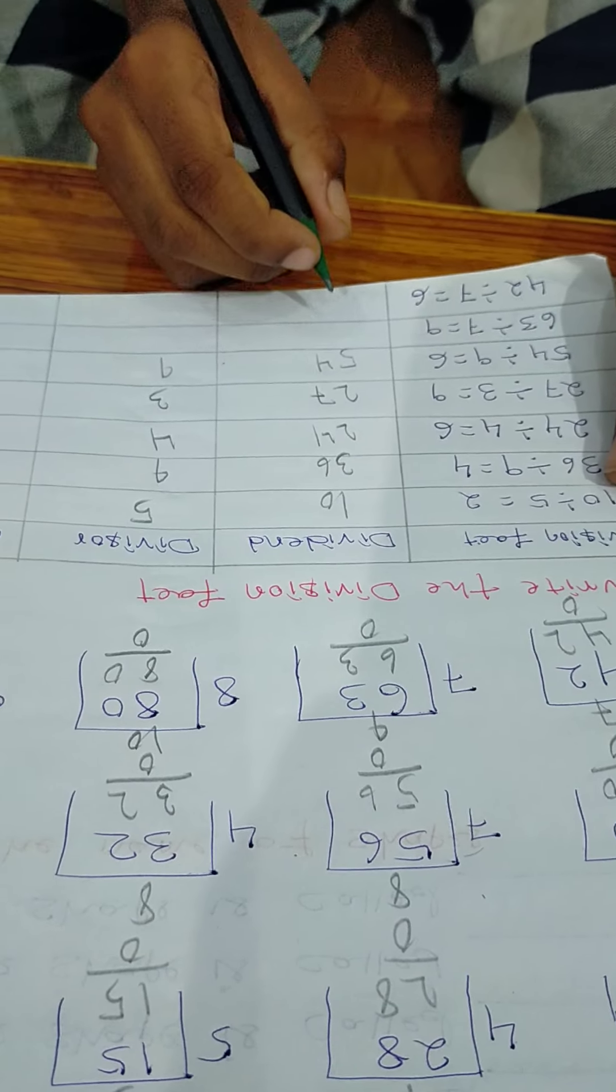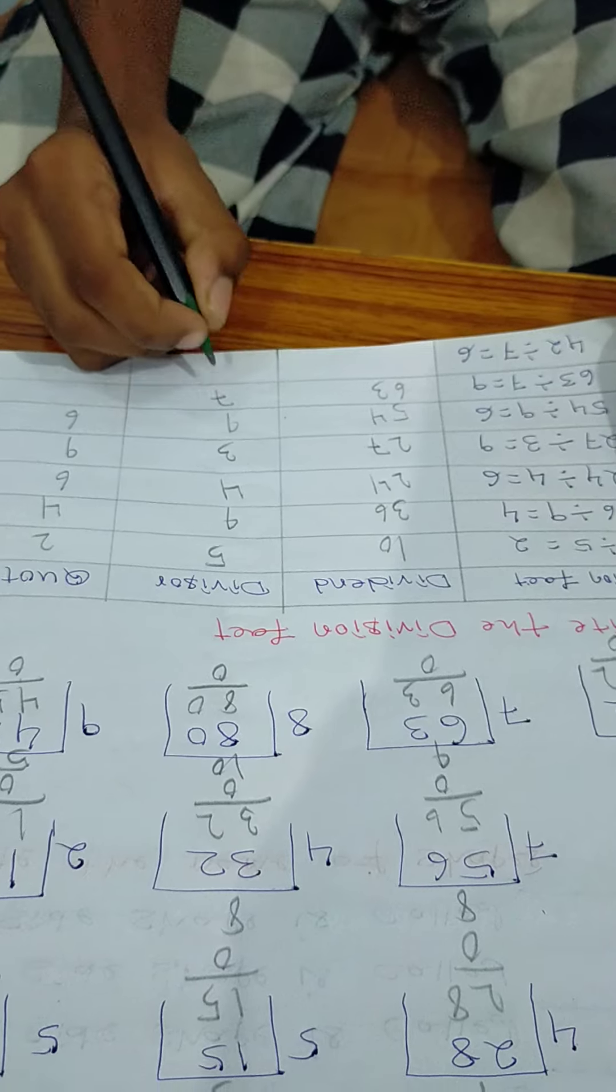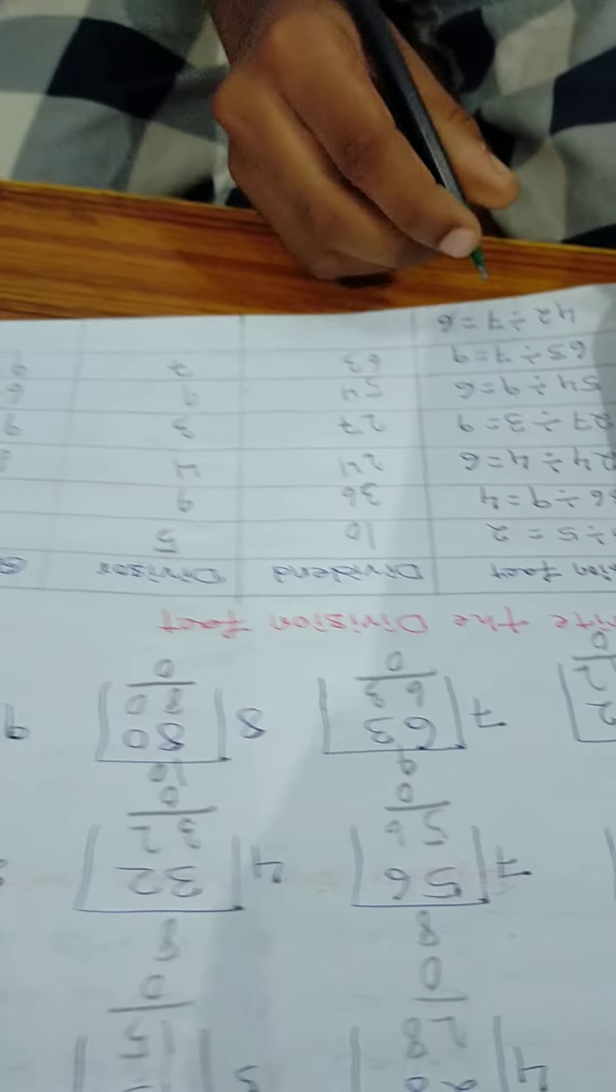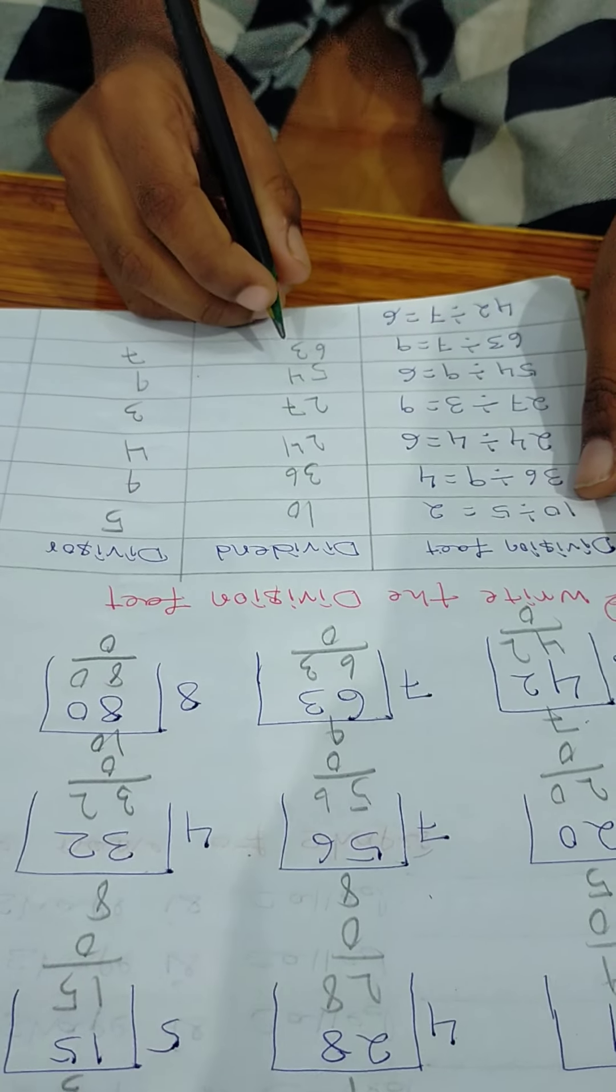36. 63 divided 7 is equal to 9. Dividend is 63. Divisor is 7. Quotient is 9.